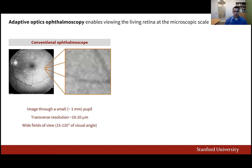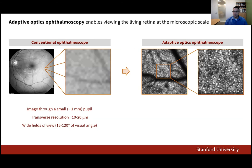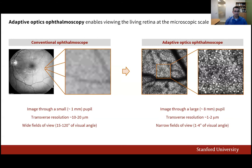Adaptive optics ophthalmoscopy, on the other hand, captures images of much smaller retinal areas but using a larger portion of the pupil. In this way, after wavefront correction, this approach provides almost a full order of magnitude higher resolution, as illustrated by the detail on the images on the right side of the slide.